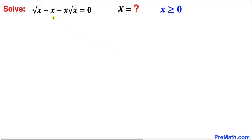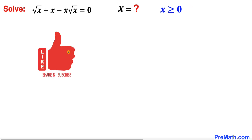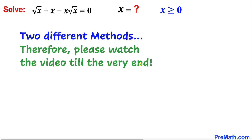Welcome to pre-math. In this video we are going to solve the radical equation: square root of x, plus x minus x times square root of x, equal to zero, where x is greater than or equal to zero. I am going to show you two different approaches to solve this problem, so please watch this video till the very end.